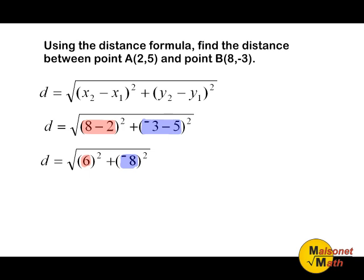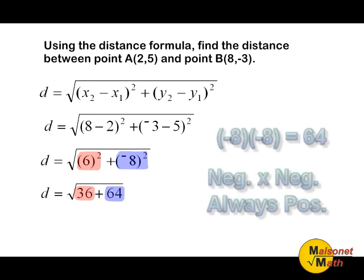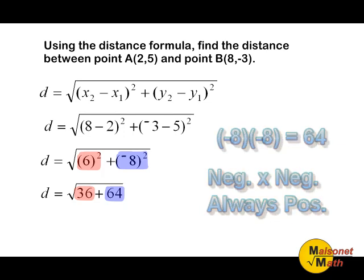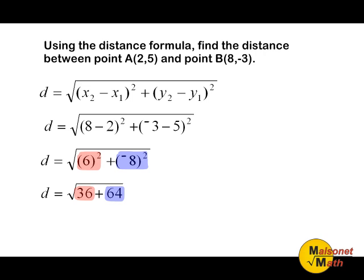8 minus 2 is 6, and negative 3 take away 5 is negative 8. Next, we must square both of our differences. The difference of the x values was 6, and 6 squared is 36. The difference of the y values was negative 8, and negative 8 squared is positive 64. Remember that a negative times a negative equals a positive. The reason that the formula requires us to do this is because distance is always going to be a positive number. That's why everything is in terms of absolute values when dealing with the distance formula.